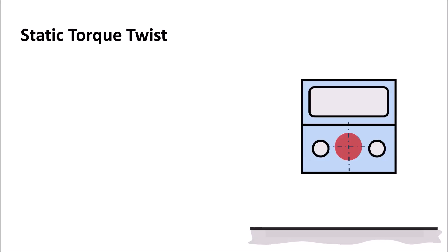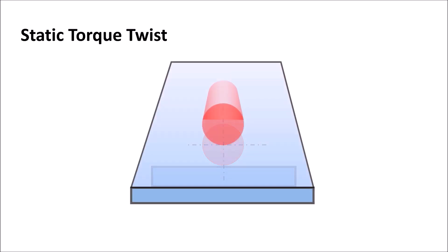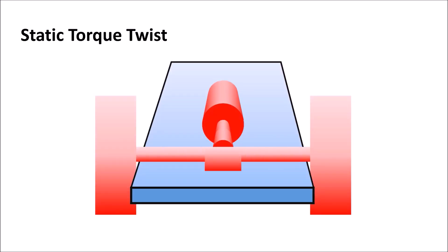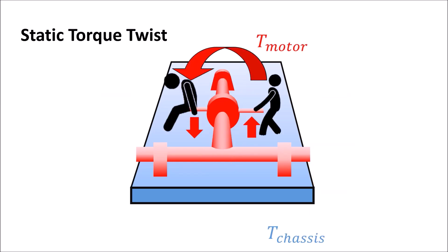Recently we explained that static torque twist is generated by the motor torque that is transferred via the axle towards the chassis so that it bends the chassis in longitudinal direction.